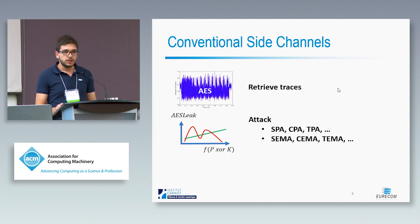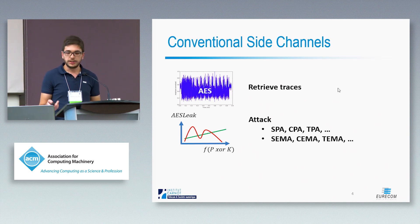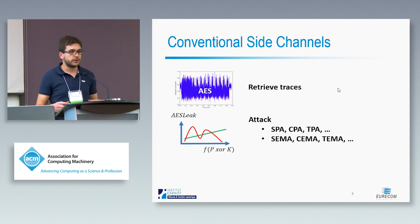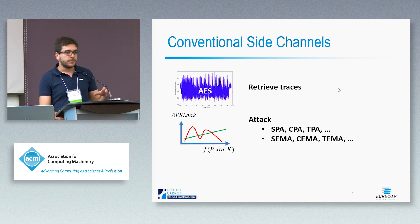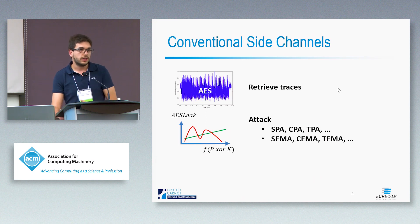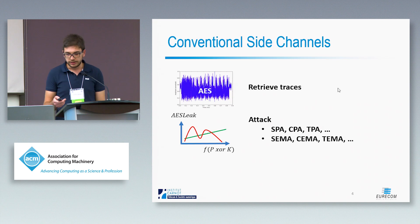Once we retrieve the information, we have traces that contain information about, for example, a cryptographic algorithm. Here you can see AES — you can distinguish the key schedule and the 10 rounds. Once we have these traces, we can run a number of attacks like simple power analysis, differential, correlation, template, and so on, which basically consist in finding a variable that we can measure through a leak and guess based on the value of the key, so that if we see a correlation between guesses and real measurements, that means the guess is correct, otherwise the guess is wrong.